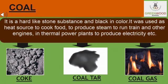Coal is used as a fuel to cook food, in thermal power plants to produce electricity, and as fuel in various industries. It was also once used as fuel to run steam-powered railway engines. When coal is processed, it yields three main products: coke, coal tar, and coal gas, which are used by many industries.